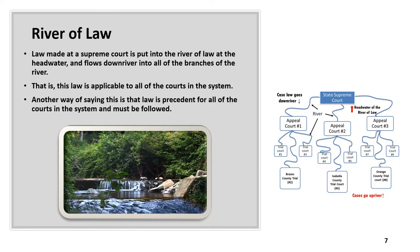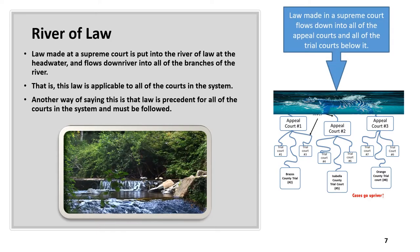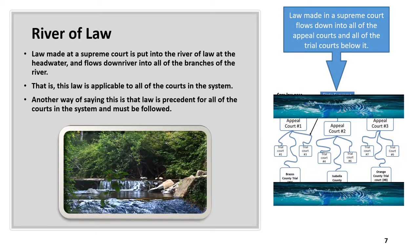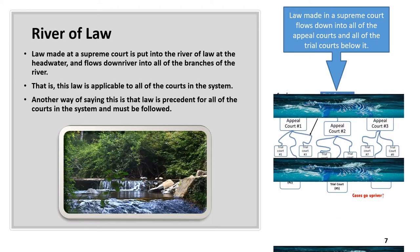Law made at a Supreme Court is put into the river of law at the headwater and flows down river into all of the branches of the river. That is, this law is applicable to all of the courts in the system — it is precedent for all of the courts in the system and must be followed. Law made in a Supreme Court flows down into all of the appeal courts and all of the trial courts below it.